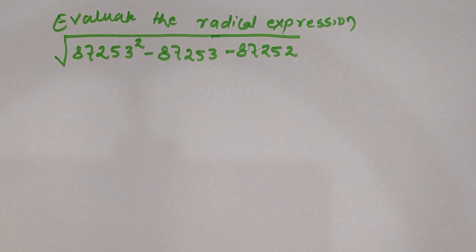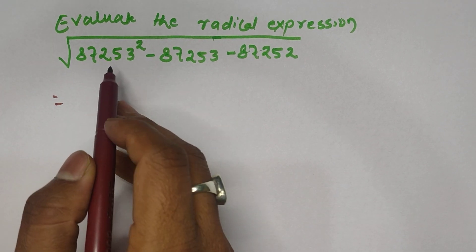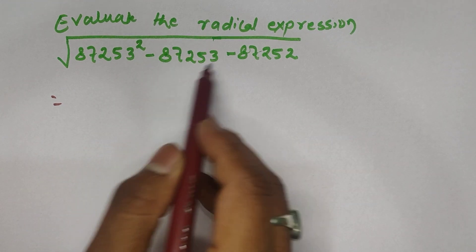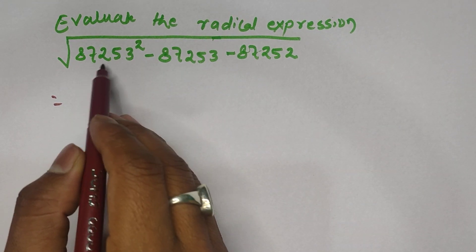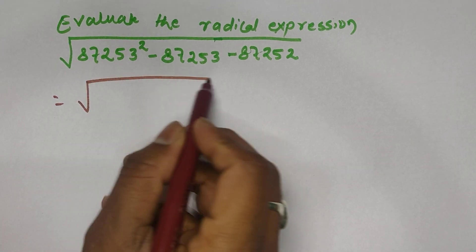Let's find the solution of this radical. If you see this, then this 87253 is the square and this one is the same, so you can take 87253 as common. So let us take the common.